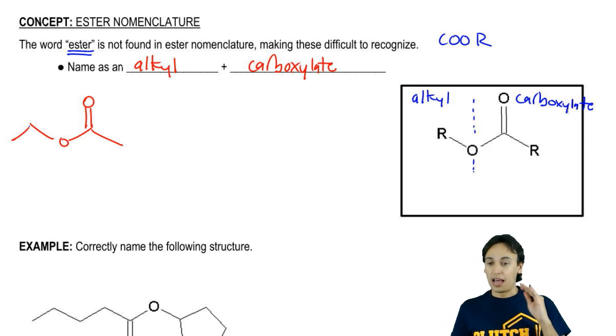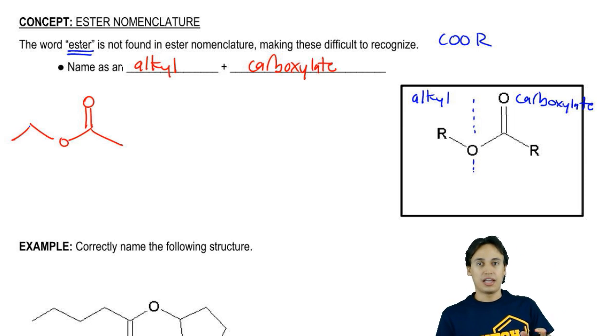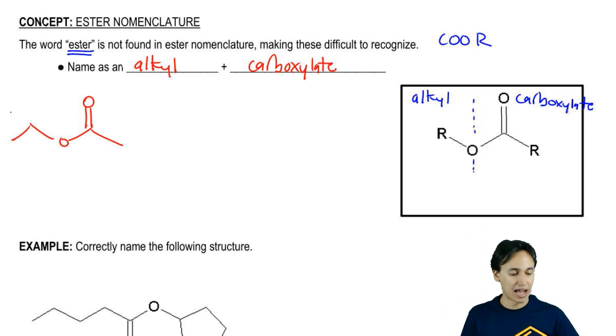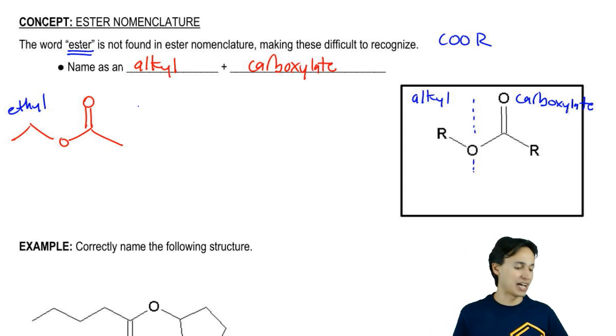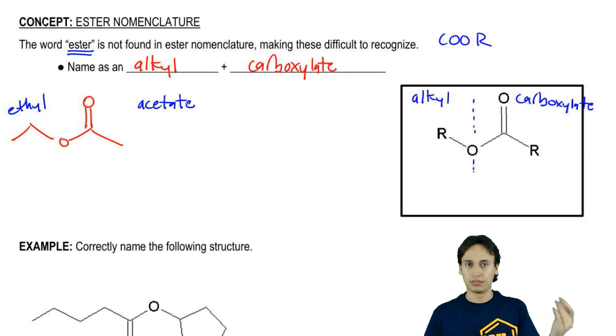Here, we've got an ester obviously, and we have an alkyl group and a carboxylate. The way we would name this is the alkyl group is ethyl, two-carbon chain. The carboxylate could be named in one of two ways. It could be named as the common name, which would be a two-carbon chain, which would be acetic acid, which would be acetate because acetate is the negative anion.